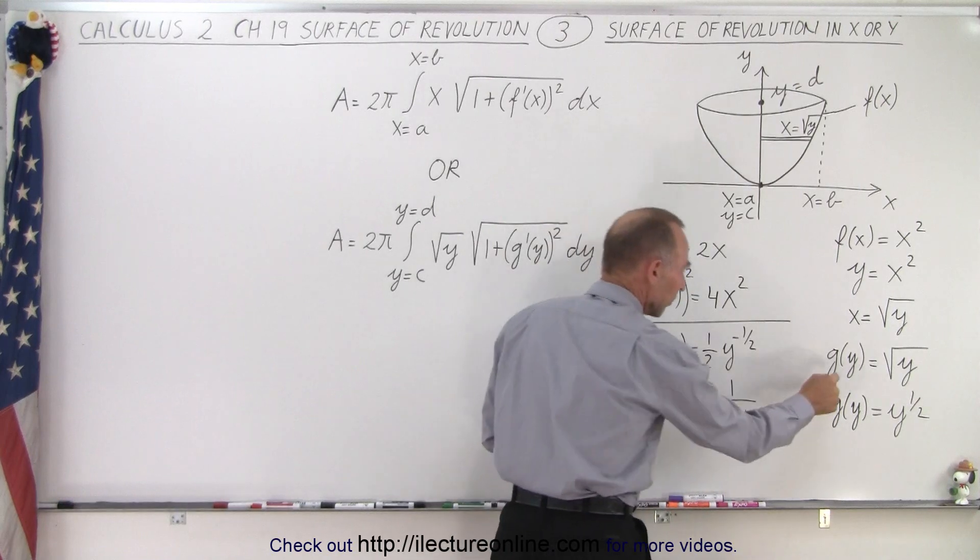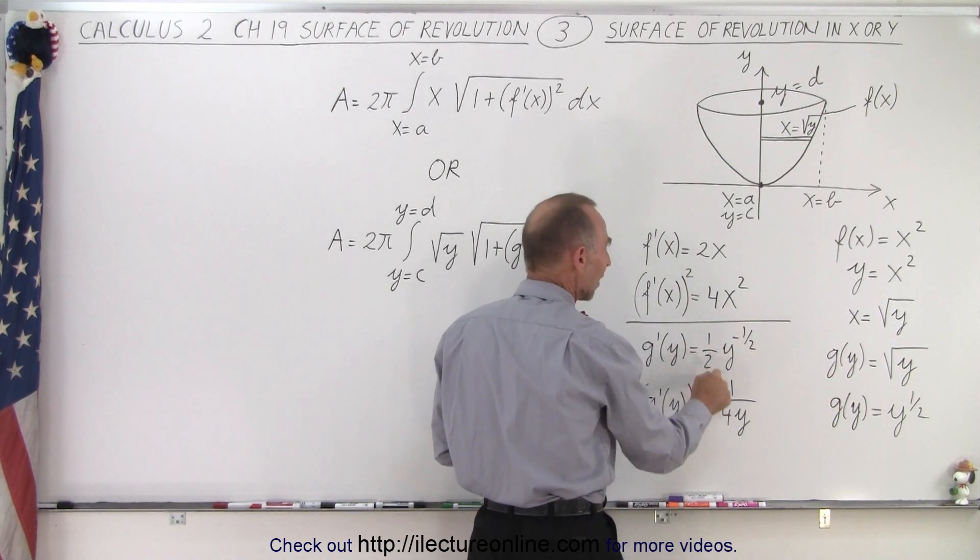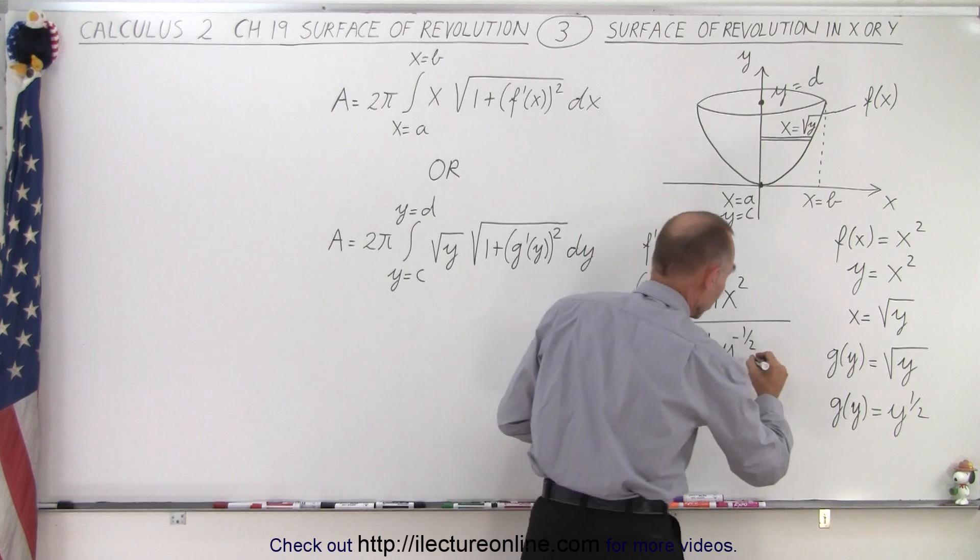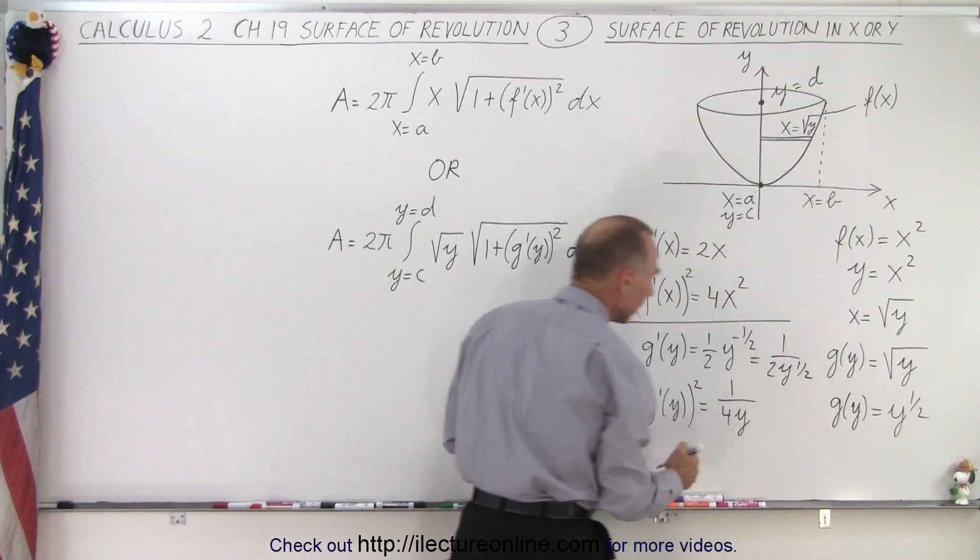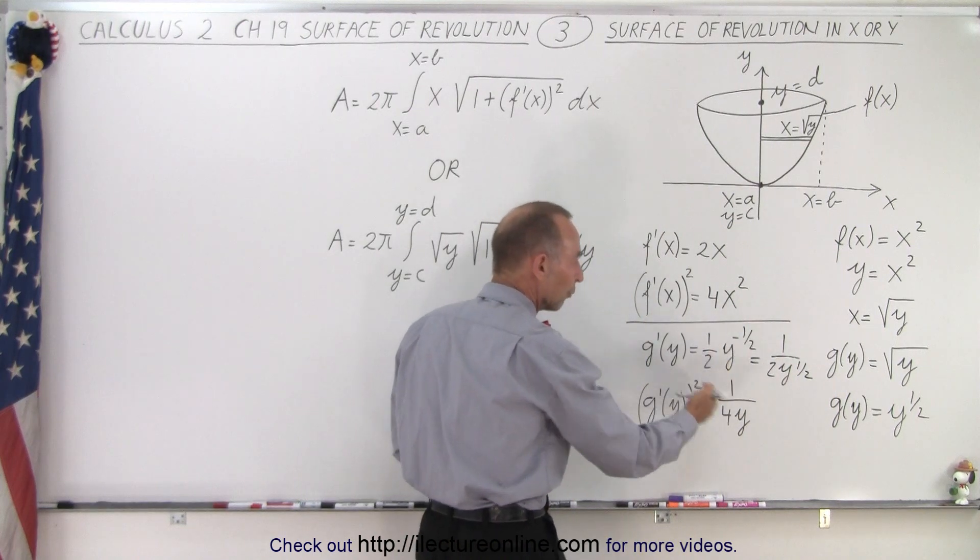If we take the derivative of g(y), we get one half y to the minus one half, which is essentially equal to 1 over 2y to the one half power. And then when we square it, we get 1 over 4y.